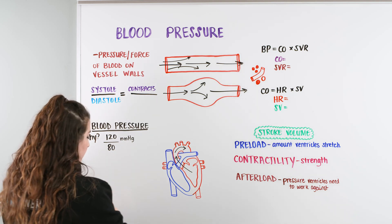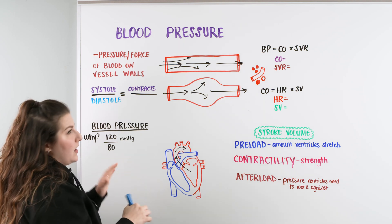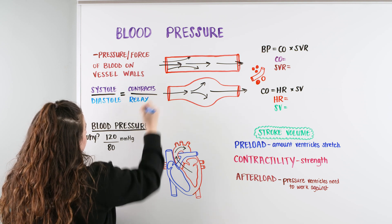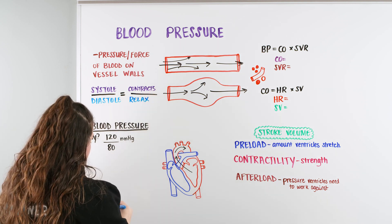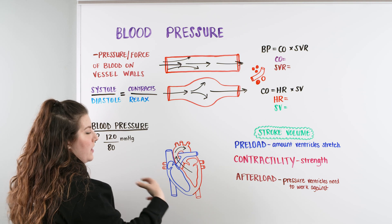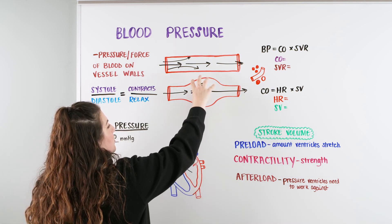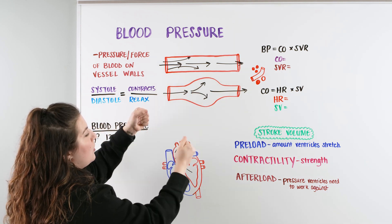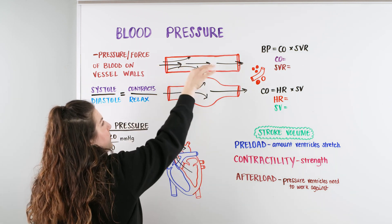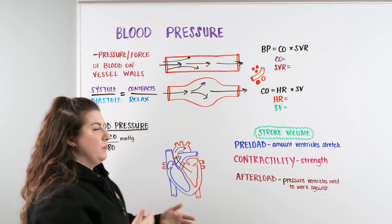And then we have the second number, which we call the diastolic, or when diastole occurs. And what does that word mean? That means to relax. So when we have relaxation of the ventricles, that's when we have our filling. So when the blood is filling, we have this bulge that had occurred from systole that needs to recoil or come back down. And when it comes back down, the pressure that is left with that blood still going through the vessels is our diastolic, or our second number.